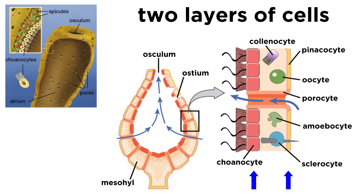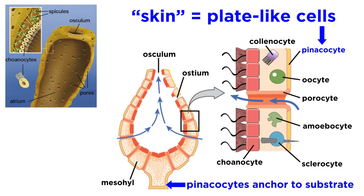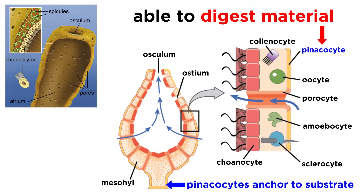The bodies of sponges are made of two thin layers of cells, with a jelly-like mesohyl sandwiched between them, which is primarily composed of collagen. The outer layer is covered in a single layer of external skin composed of flat plate-like cells called pinacocytes. Pinacocytes at the base of the animal anchor it to its substrate — the thing it is stuck to — while those forming the skin can protect it and also digest organic material.